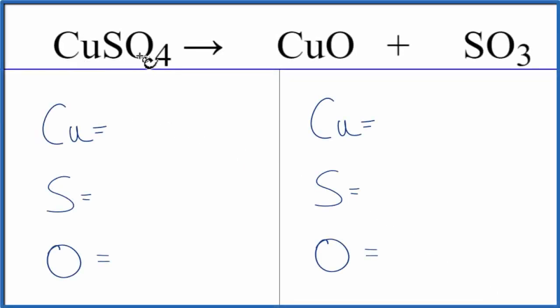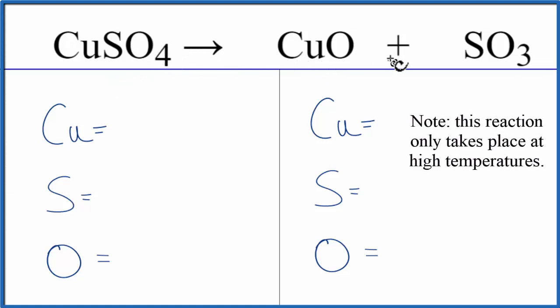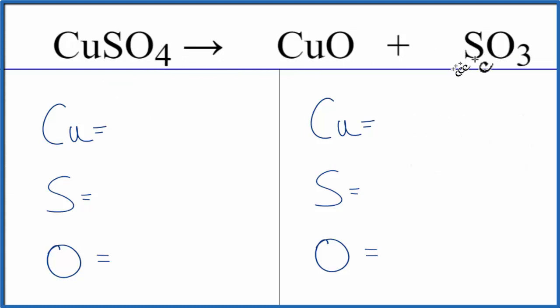In this reaction, we have copper 2 sulfate and it's decomposing, breaking apart into CuO plus SO3, copper 2 oxide and sulfur trioxide.